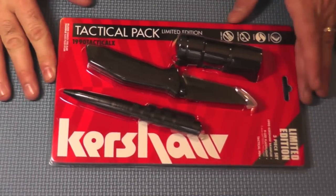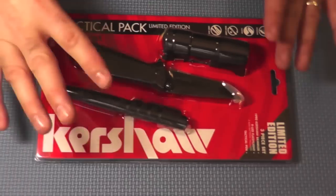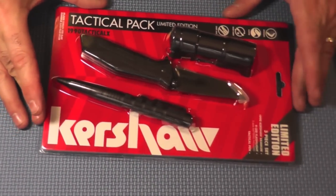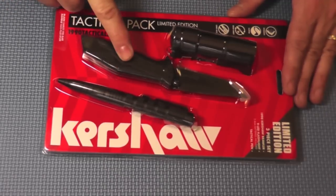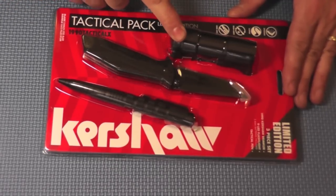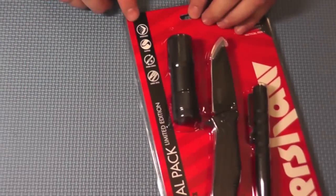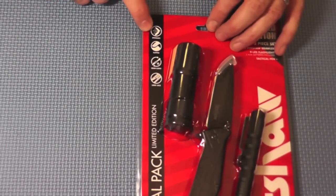Here's the packaging. Typical holiday season kind of end cap packaging that you see here. And there's three things. You get a tactical pen, the knife, a flashlight. And if you notice here, it says that it has speed safe, which is Kershaw's branded assisted opening technology.